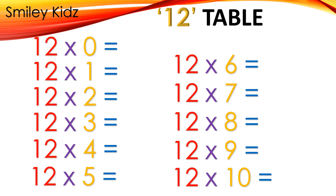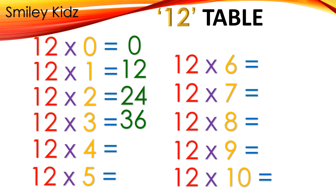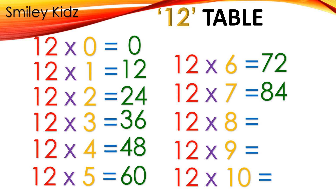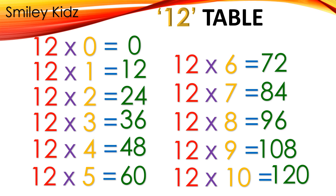Table 12: 12×0=0, 12×1=12, 12×2=24, 12×3=36, 12×4=48, 12×5=60, 12×6=72, 12×7=84, 12×8=96, 12×9=108, 12×10=120.